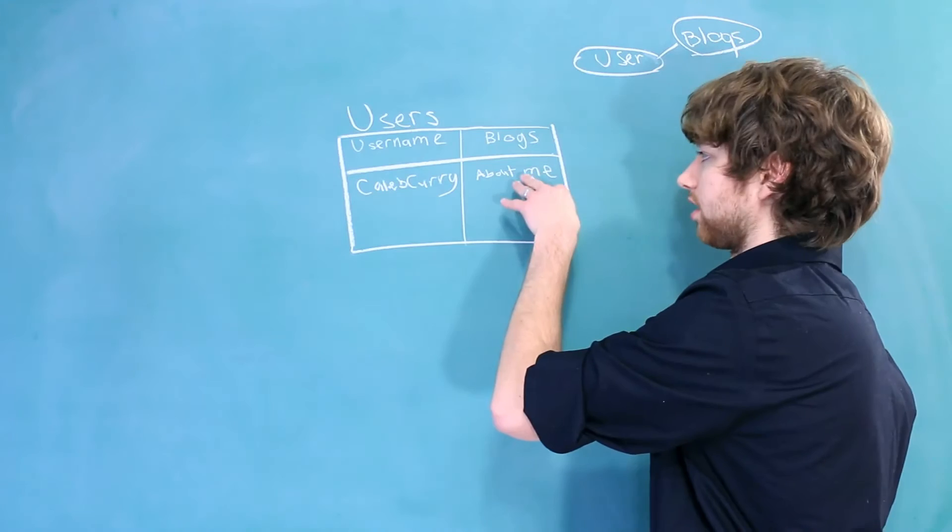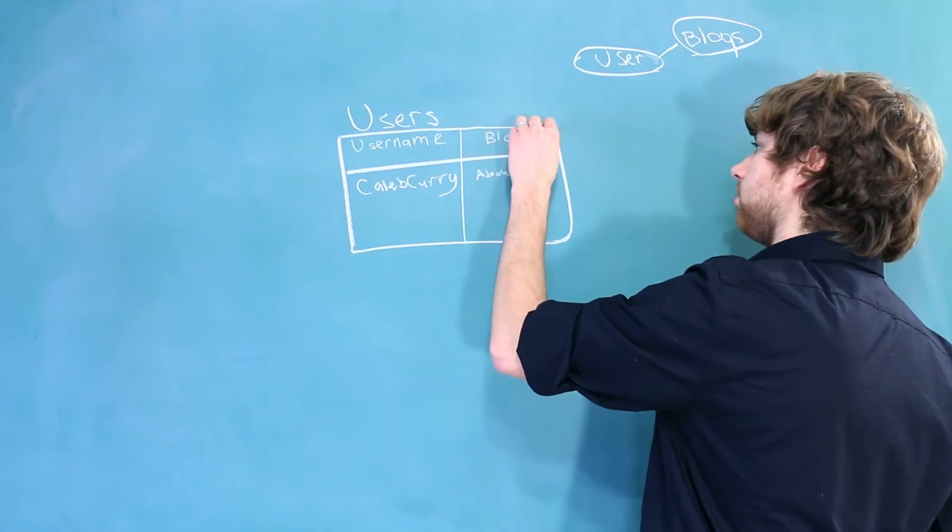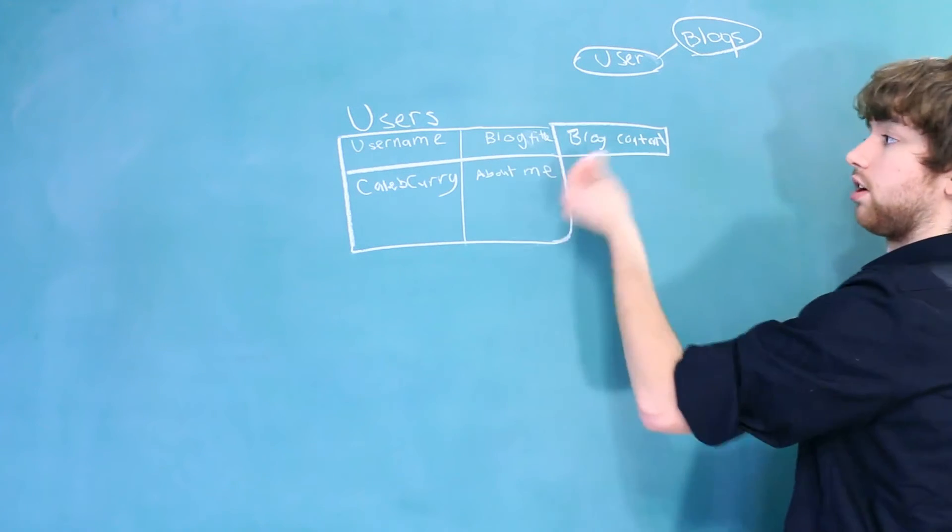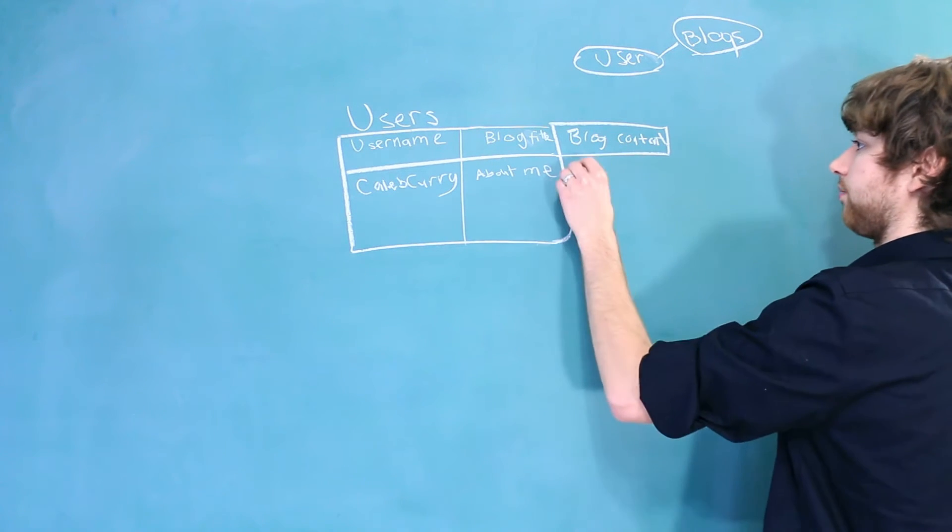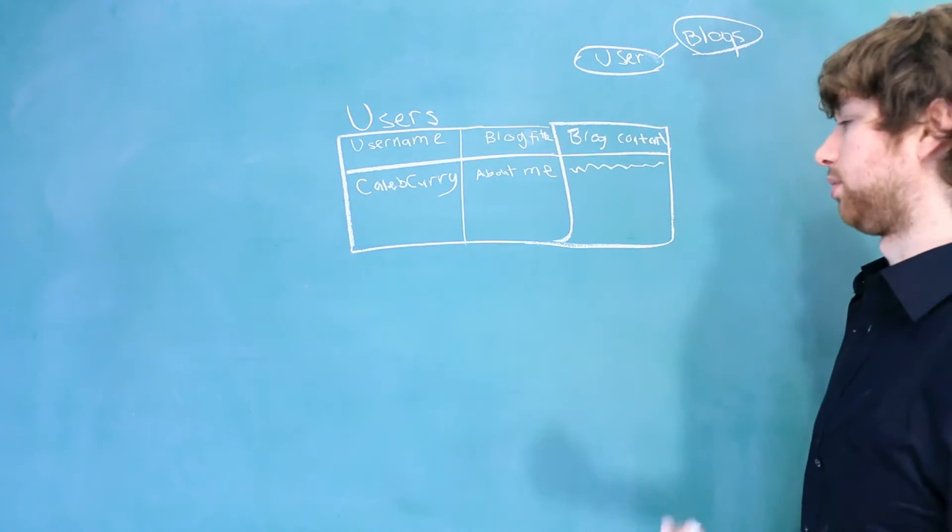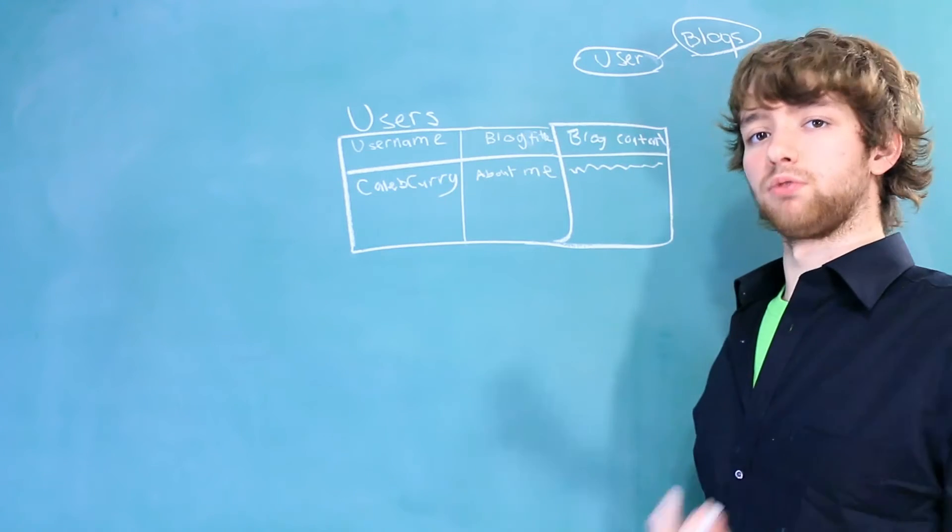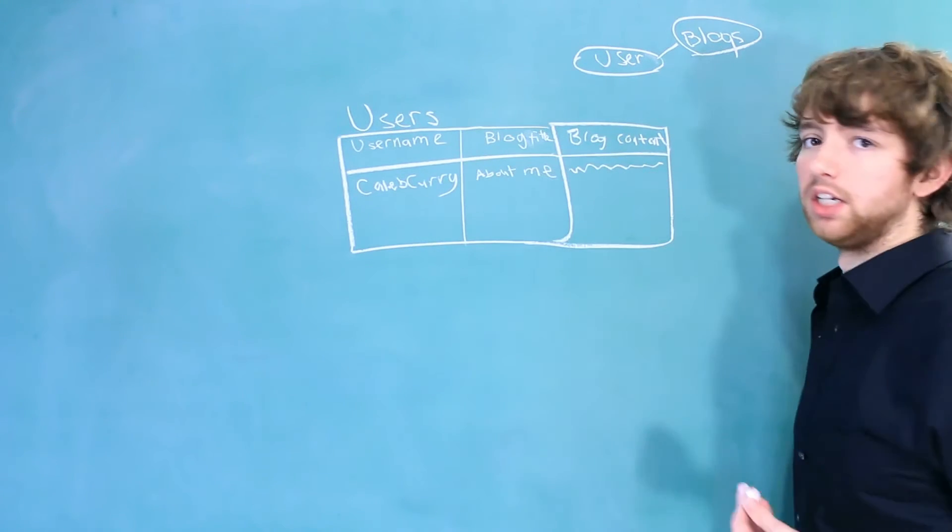For example, this is the blog title. So we might think, let's separate that out. Let's say blog title, and we'll make a new column, blog content. And then you could say whatever you wanted and store it as a string. This is also bad though, because now we are actually storing this as a one-to-one relationship. That's because we can only have one blog in here. So how do we add a blog if we did it this way?